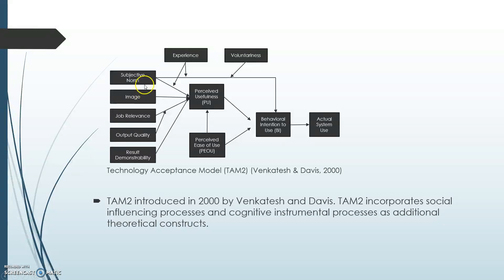Subjective norms are a person's perception that most people who are important to them think they should or should not perform a specific behavior. This is important in that individuals may choose to perform behaviors they would not otherwise perform if they fear consequences of not performing the behavior, or if someone important to them thinks they should and they are motivated to comply.